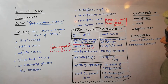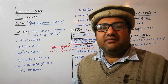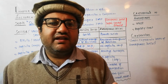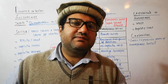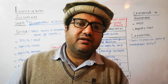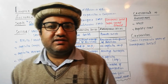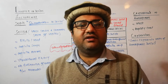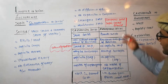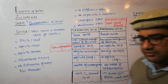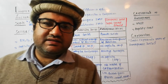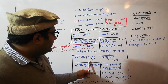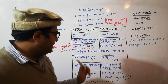Crystalline solids may be anisotropic, meaning their physical properties may change by changing the direction. For example, graphite is a conductor parallel to its layers but an insulator perpendicular to the layers — this is called anisotropy and is a particular feature of crystalline solids. Amorphous solids are always isotropic, meaning they show the same physical properties in all directions. Crystalline solids have a definite molar heat of fusion, while amorphous solids do not.